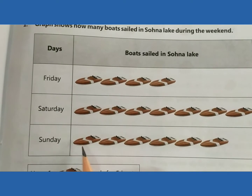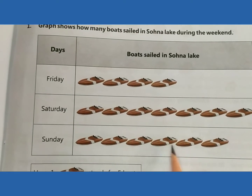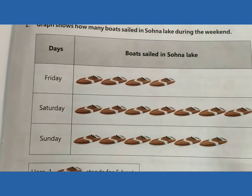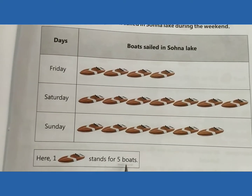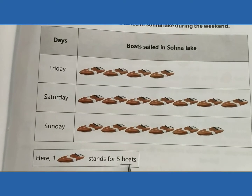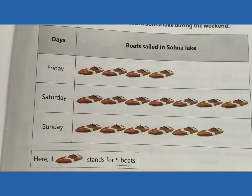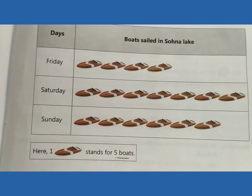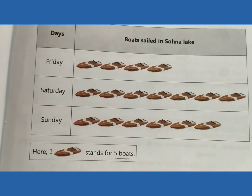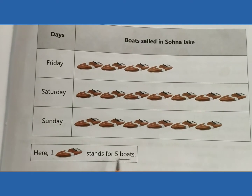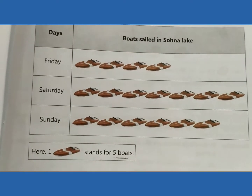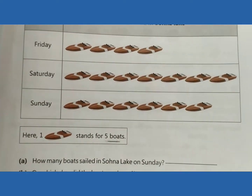Sunday has 6 boats. But one boat symbol stands for 5 boats. Remember that — one boat stands for 5 boats.